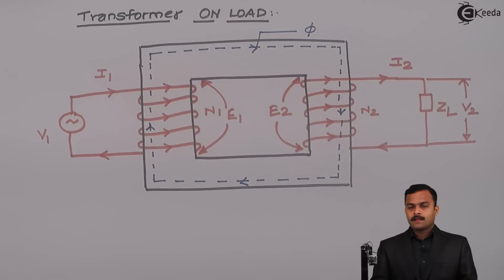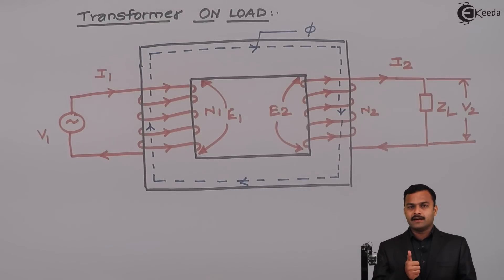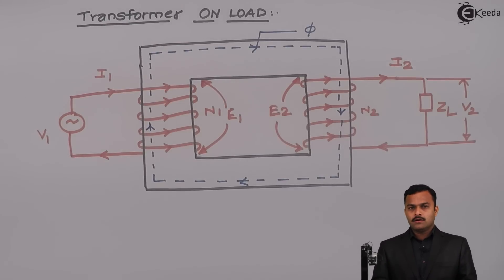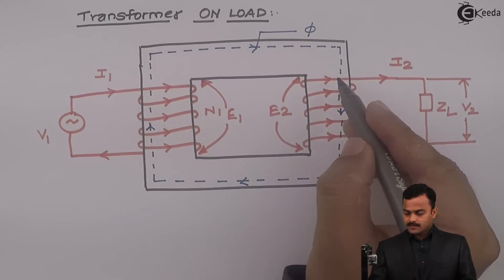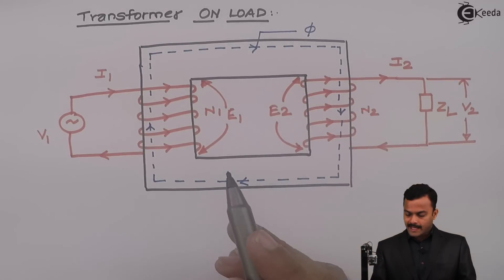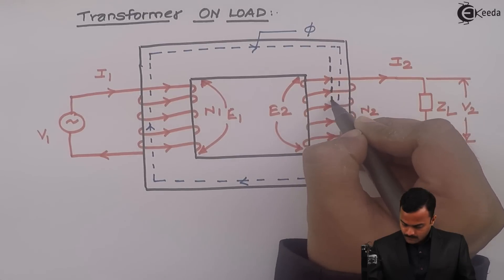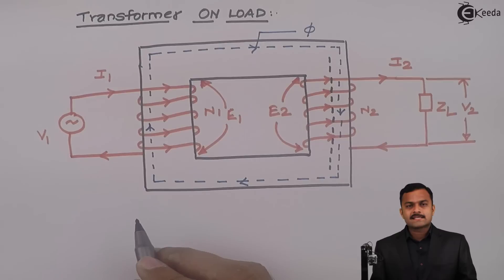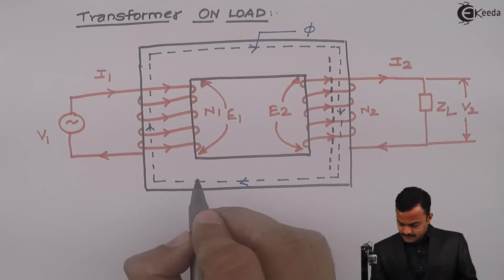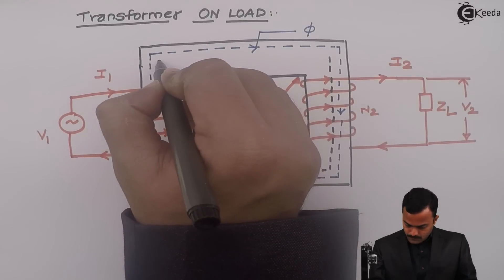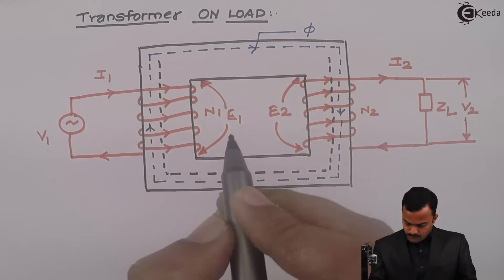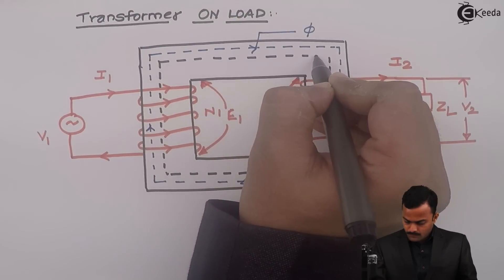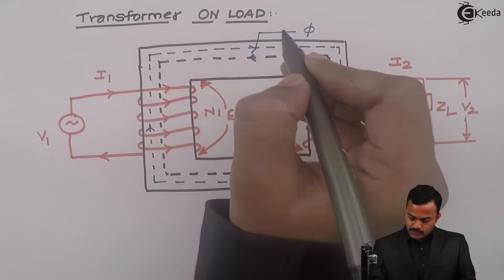Now comes the trick. I2 is flowing through this winding in this direction. If the curved fingers represent the direction of current, the thumb outstretched will determine the direction of magnetic flux. So inside the core, one more flux is produced because of this I2, and the direction of that flux is opposite to that of the main flux.